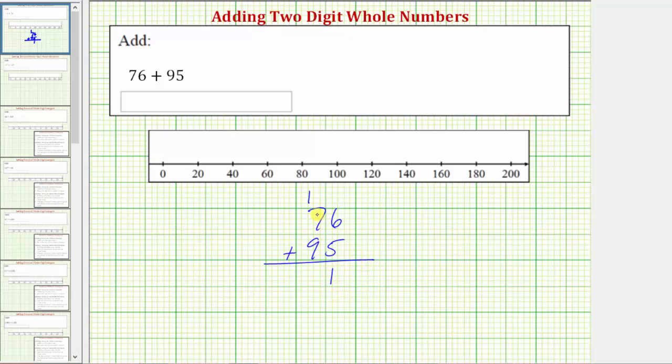Now we add the digits in the tens place value. Seven plus nine equals sixteen, plus one equals seventeen, giving us a sum of one hundred seventy-one.